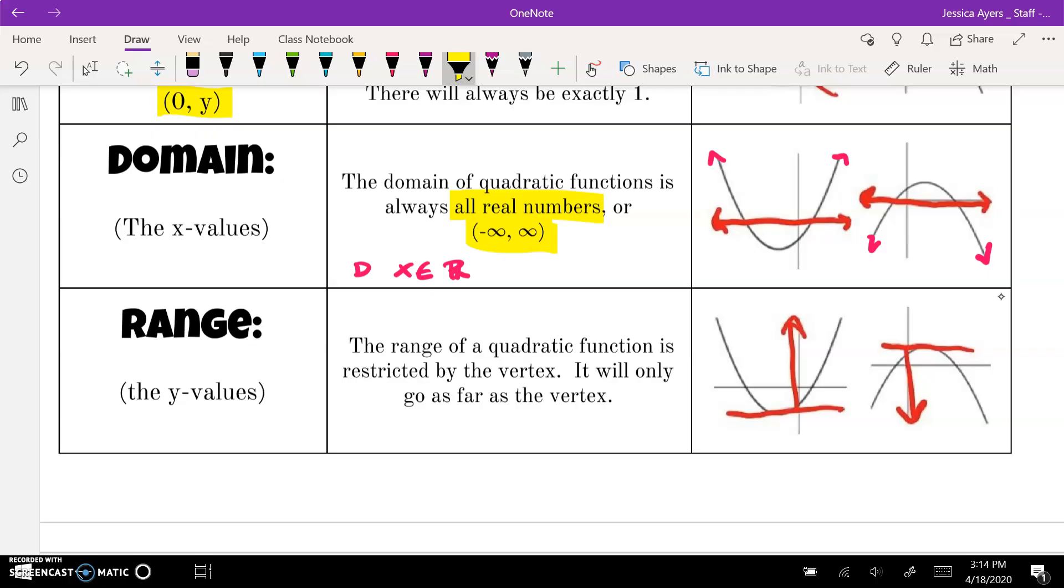For range, you're talking about your y values. This will always be from the vertex and up or from the vertex and down. And that's because the vertex is the highest or lowest point. There's nothing below that vertex or above that vertex. So that's why the vertex restricts your range.